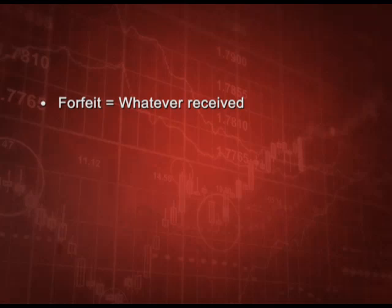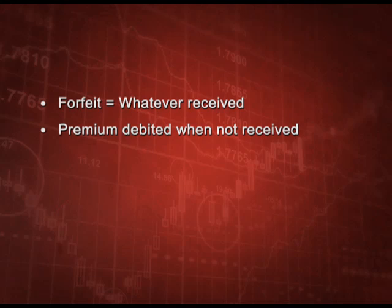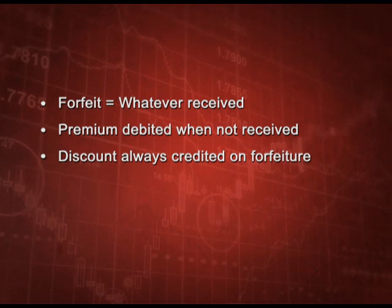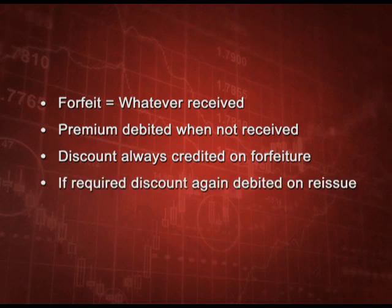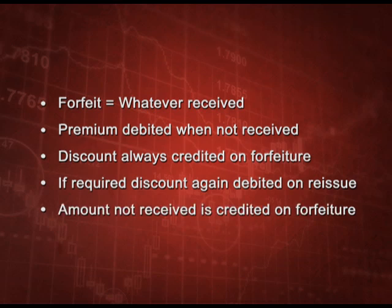On reissue: bank account debit, share forfeited debit to equity share capital. If we are issuing at par or at premium the share forfeited balance is simply transferred to capital reserve. To conclude the important points: first, on forfeiture credit whatever you have received to share forfeited; second, premium is debited only when it is not received; third, discount is always credited on forfeiture; fourth, if required, discount is again debited on reissue; and fifth, the amount not received is credited on forfeiture.